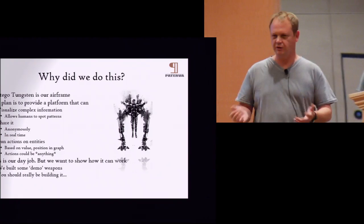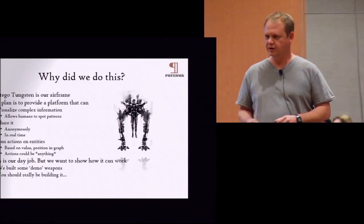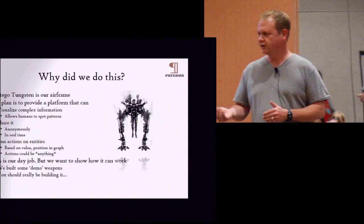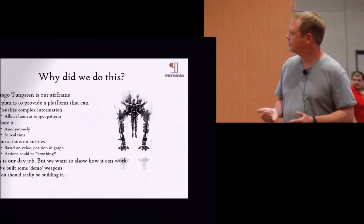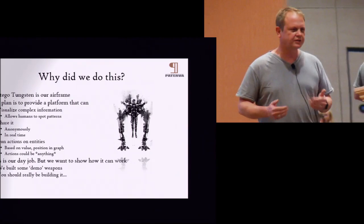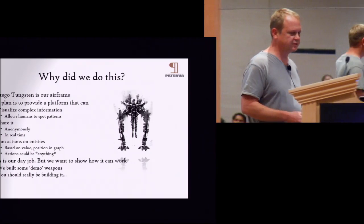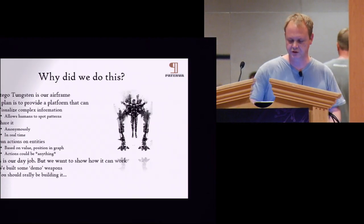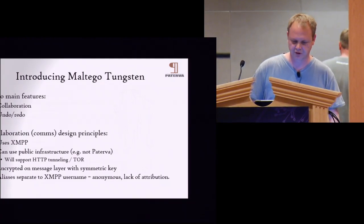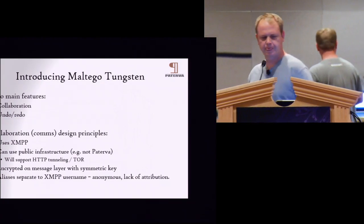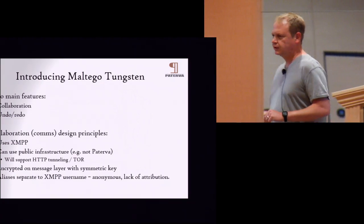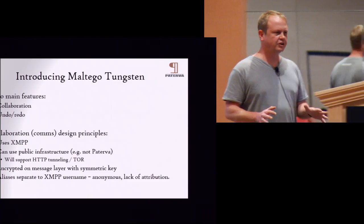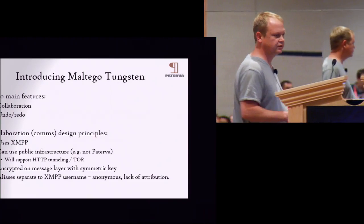Our day job is to build Maltego and make it better. We've got a bit of a security background and it helped us develop some of these tools, but these are tools that really you should be developing. In Tungsten, we have two main big new features: collaboration, which allows real-time collaboration between graphs and people, and finally we have undo and redo.